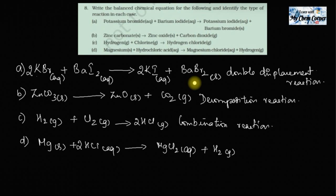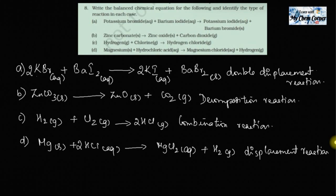In this case, magnesium has no other ion with it, but hydrogen has Cl with it, and that Cl has just moved to magnesium. Nothing from magnesium is moving the other way, so only one displacement is happening. This is not a double displacement — it is just a single displacement reaction. In double displacement, two things simultaneously exchange, but here only Cl moves from hydrogen to magnesium.